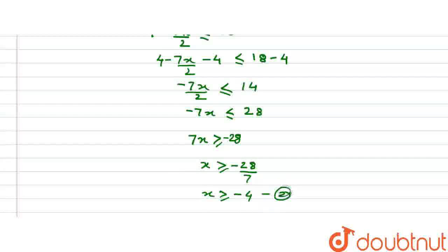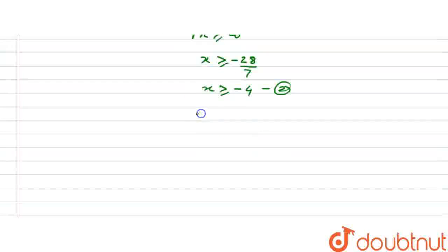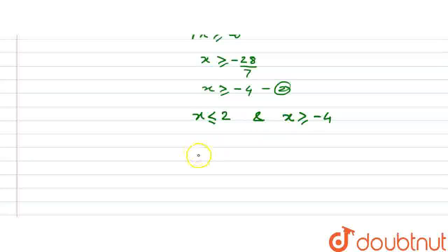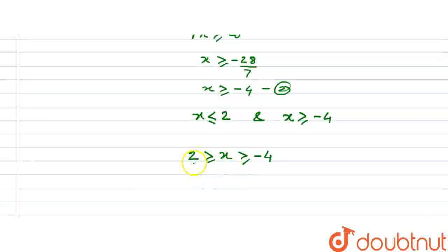This is the second part of the solution. Combining equation 1 and 2, we have x less than or equal to 2 and x greater than or equal to minus 4. So the solution of this inequality is x lies between minus 4 and 2, including minus 4 and 2. This is the required solution. Thank you.